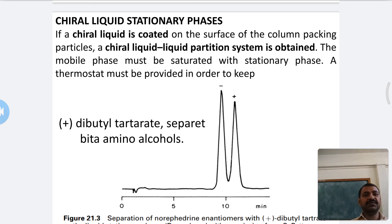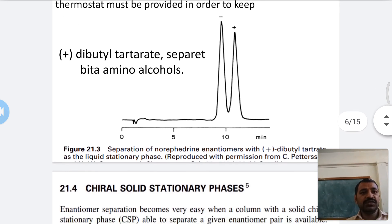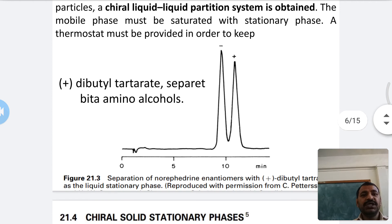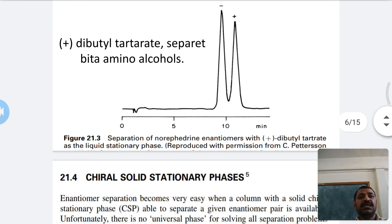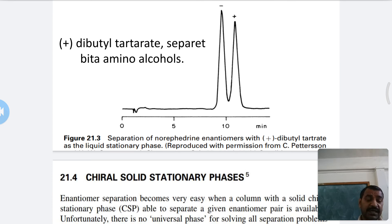The mobile phase must be saturated with the stationary phase, and a thermostat must be provided to keep the temperature constant. An example of a chiral liquid stationary phase is dibutyltartrate, used to separate beta-amino alcohols.